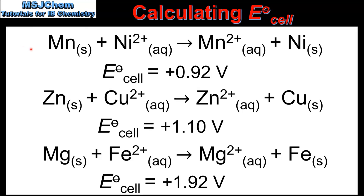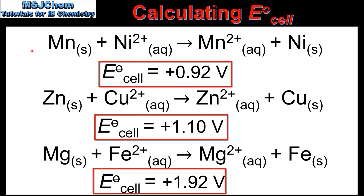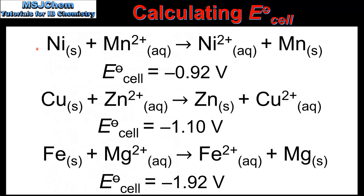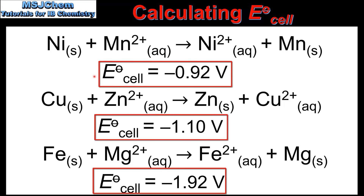So to end the video, we'll look at spontaneity. Here we have the overall equations for the three reactions we've looked at so far. Note that for each reaction the cell potential is positive, which tells us that each reaction is spontaneous. It's also worth noting that for a voltaic cell, the cell potential will always be positive, because voltaic cells involve spontaneous redox reactions. We can also see the reverse reactions — the cell potential values are numerically the same, but the sign has changed from positive to negative. A negative cell potential value means the reaction is non-spontaneous. So to summarize: a positive cell potential value means the reaction is spontaneous, and the reverse reaction will have a negative cell potential value and therefore be non-spontaneous.